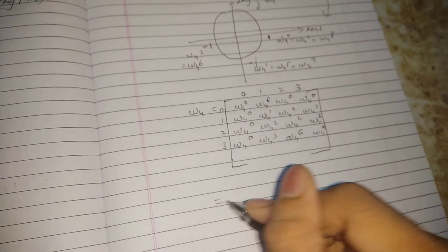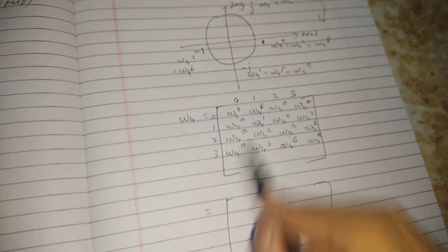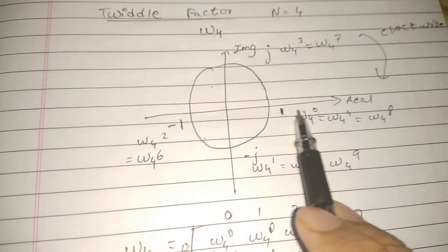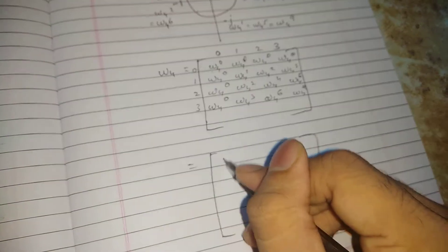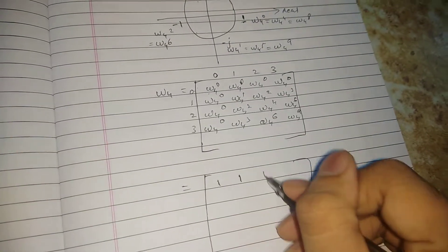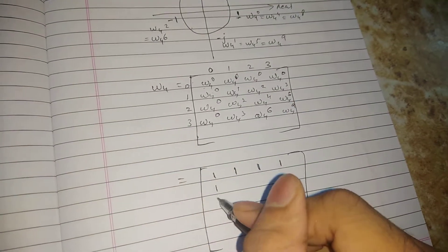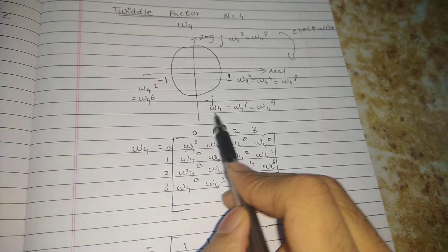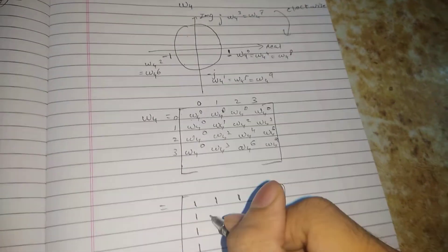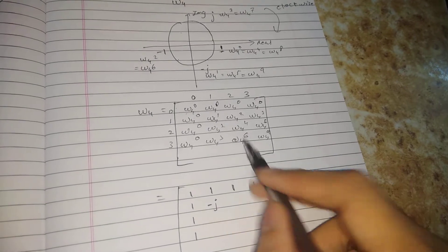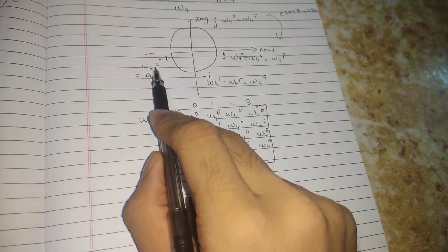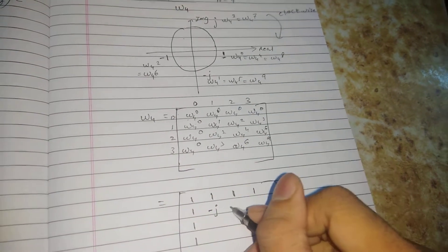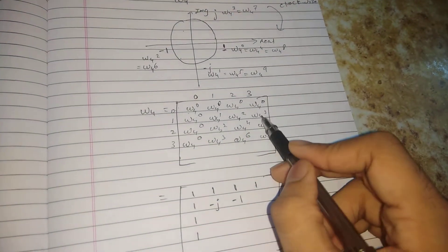Now substitute the values from the unit circle into the matrix. W4^0 equals 1, so write 1 in all positions where the exponent is 0. W4^1 equals -j, so write -j. W4^2 equals -1, so write -1.